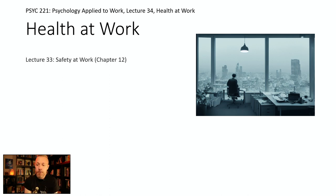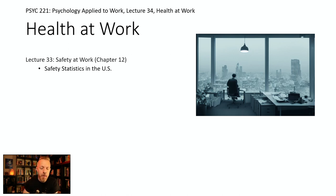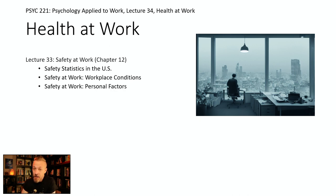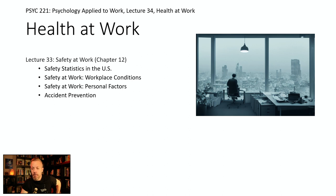Last lecture, Lecture 33, we started Chapter 12 and talked about safety at work — specifically safety statistics in the U.S., how workplace conditions affect safety, how personal factors affect safety, accident prevention, how organizations put things in place to reduce the rate of accidents, and then workplace violence.